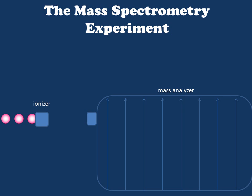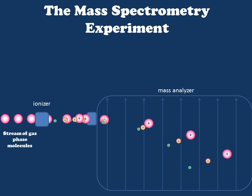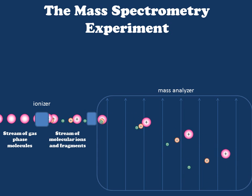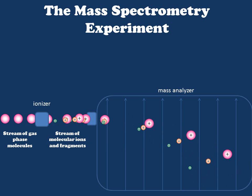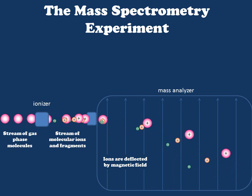Now let's take a look at how all of these different elements can be combined into a single experiment which will tell us something about the mass of our compound. As a stream of gas phase molecules enters from the left-hand side, it reaches the ionizer where the beam of molecular ions and fragment ions is generated. From this point, the stream of molecular ions moves to the mass analyzer, where ions are separated in space based upon their mass — or more accurately, their mass-to-charge ratio. Notice that ions within the mass analyzer are deflected to a different extent by the magnetic field, meaning each beam reaches the other end at a different position.